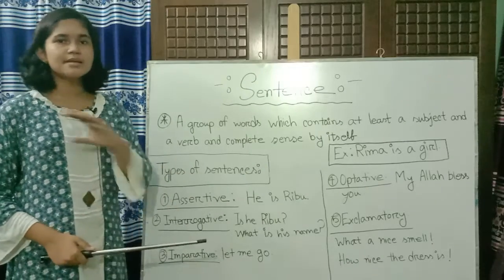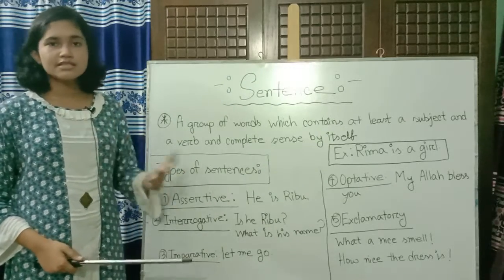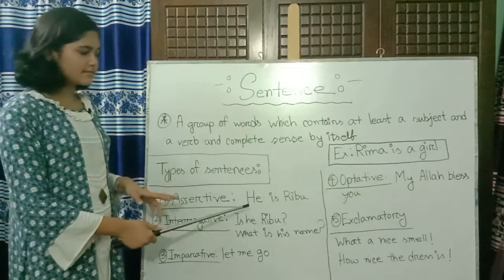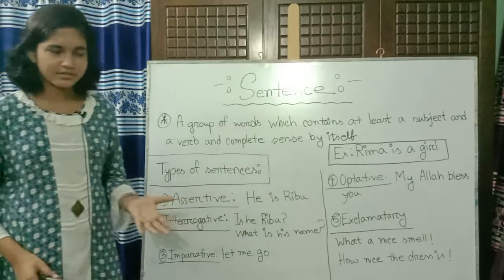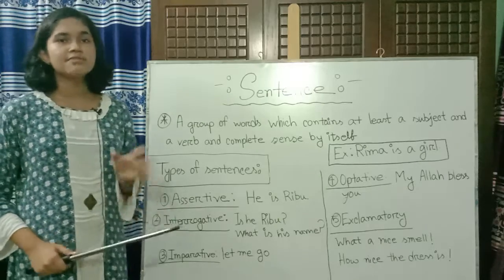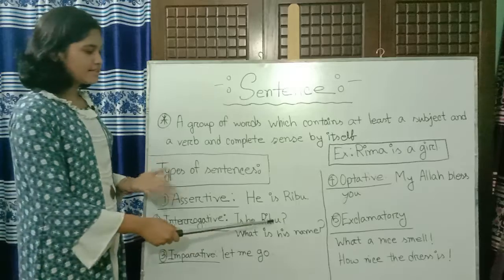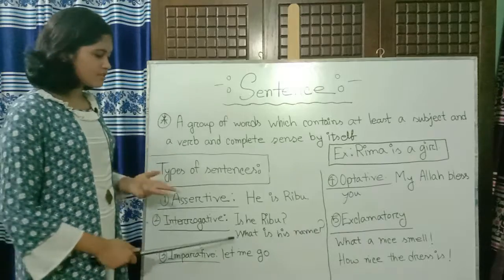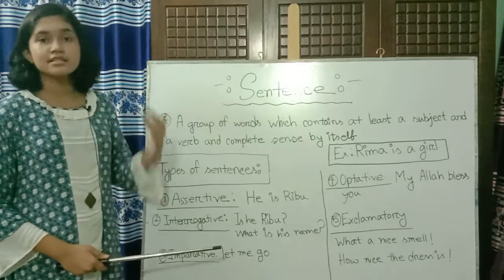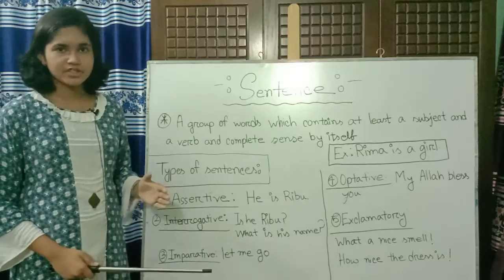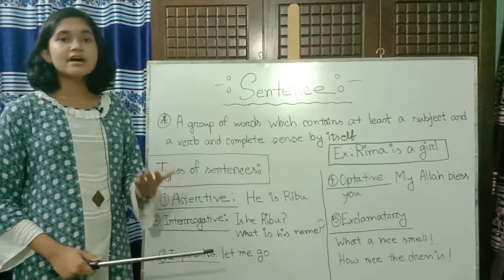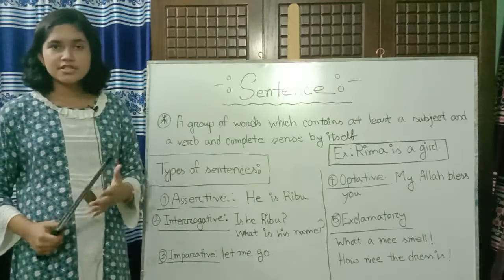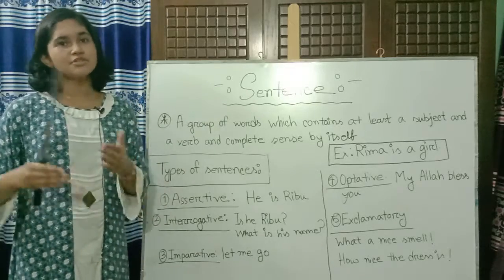So assertive sentences are simple statements we make all day, like 'He is Ribu' or 'I eat rice.' For interrogative sentences, which indicate questions, we must use a question mark. There are two ways to form them: WH-questions and auxiliary questions. There is also the auxiliary negative form, which belongs to sentence transformation.